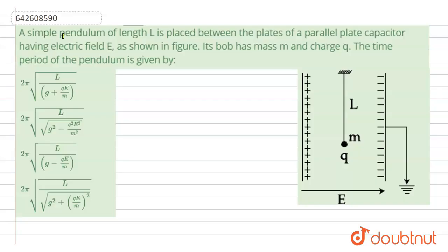Hello everyone, the question says that a simple pendulum of length L is placed between the plates of a parallel plate capacitor having electric field E as shown in figure. Its bob has mass m and charge q. The time period of the simple pendulum is given by: